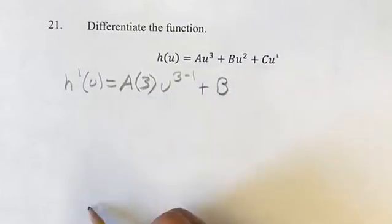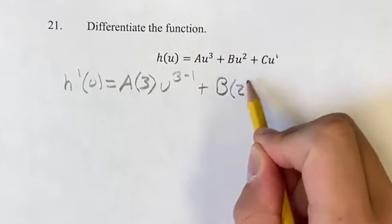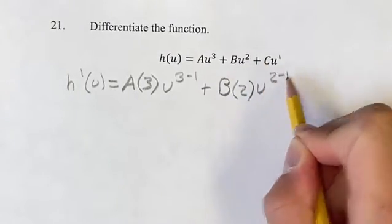Same thing with here. Coefficient out in front, bring the exponent down, subtract 1 from the new exponent.